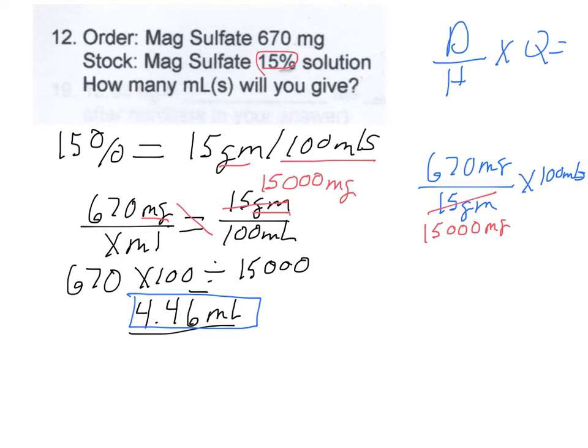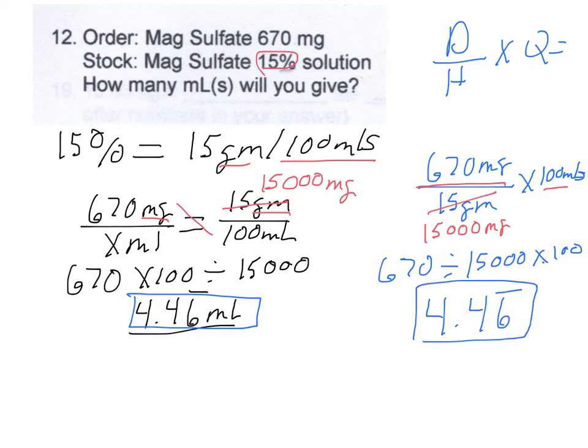Then in your calculator you can punch in 670 divided by the 15,000 times 100. So 670 divided by 15,000 times 100 and that will give you the same answer of 4.46 mLs carried out indefinitely. So just two different ways to solve a percent solution.